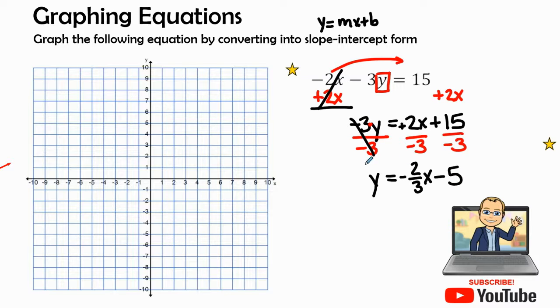Now we have our equation in the y equals mx plus b form, or what we know as the slope-intercept form, where we have our slope right here and then we have our y-intercept right here. So the y-intercept is the number that we start with. So that's our starting point. We start at negative 5.